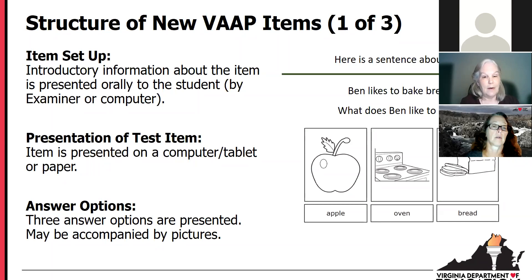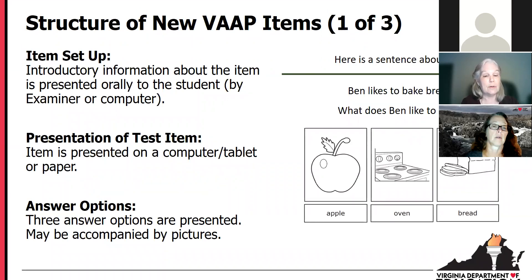You'll notice that there is just one item presented to the student at a time. If the student is accessing the item online, they would see just this item on the screen. Or if accessing it via paper, there would just be this item presented. There's lots of white space. The language used is fairly simple. In this particular example, the words are accompanied by pictures, which is often the case with these items. That's what a reading item looks like.